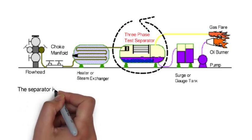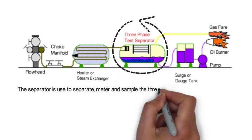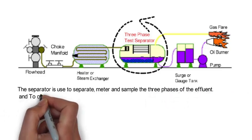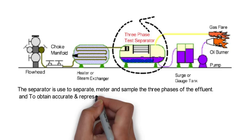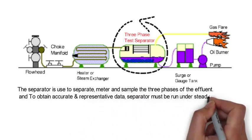The separator is used to separate, meter and sample the three phases of the effluent. To obtain accurate representative data, separator must be run under steady conditions.